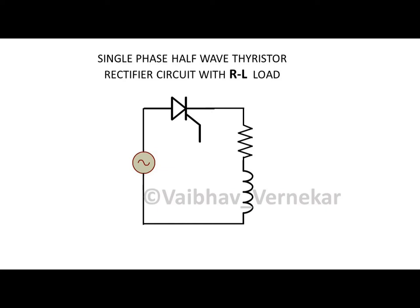The circuit under consideration is used to convert applied AC voltage into DC voltage. A thyristor is used as the rectifying element. We will consider RL load at the output.